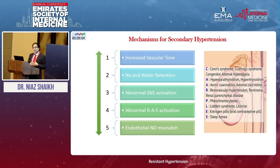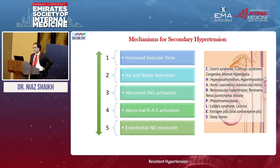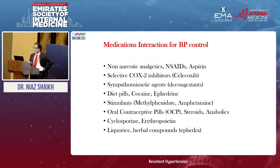Regarding secondary hypertension, there are five different mechanisms: causing increased vascular tone, increasing sodium and water retention, increasing sympathetic nervous system activity, renin activation, and endothelial nitric oxide mismatch. Certain medications also contribute — NSAIDs, aspirin, COX inhibitors, sympathomimetic agents in decongestants, oral contraceptives, chemotherapies, licorice, and herbal medications all contribute to blood pressure elevation.